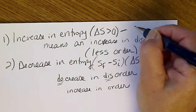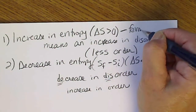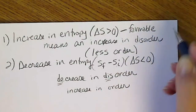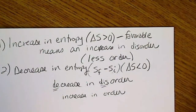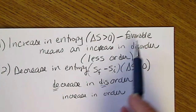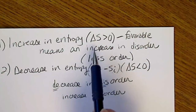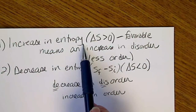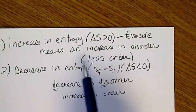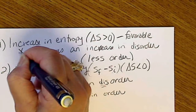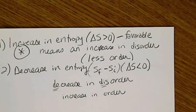Increasing disorder is the most favorable direction. You don't have to look far to see that — the top of a desk or a sock drawer makes it apparent that the universe proceeds from order toward disorder. This will be one of the criteria we look at when deciding whether a reaction is spontaneous or not.